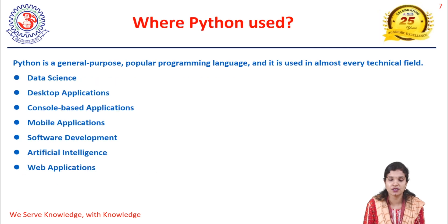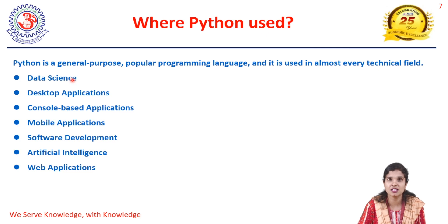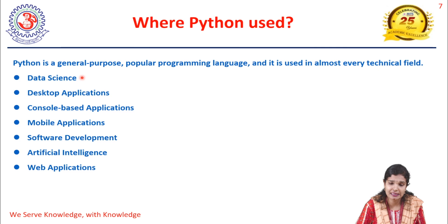Python can be used in data science, desktop applications, console-based applications, mobile applications, software development, artificial intelligence, and web applications. In data science, Python is important for its simplicity and powerful libraries like NumPy, Pandas, and Matplotlib, which provide excellent data analytics and visualization capabilities.